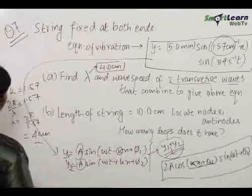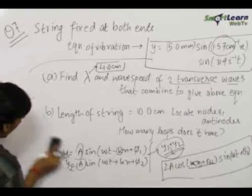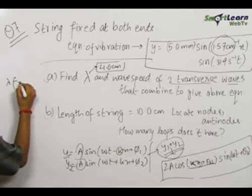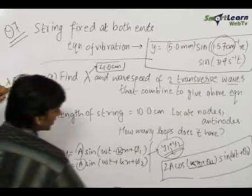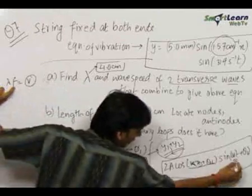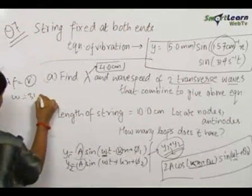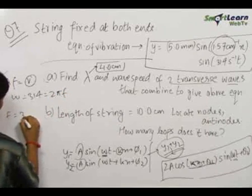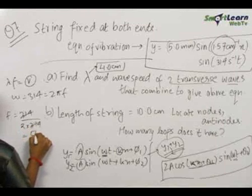Now, we need to find out the wave speed. The wave speed can be found using λf equals v, where v is the wave speed. For that we need the frequency. This frequency can be found from ω which comes in front of t. This ω equals 314 per second, which equals 2πf. Therefore, f equals 314/(2×3.14) which equals 50 hertz.